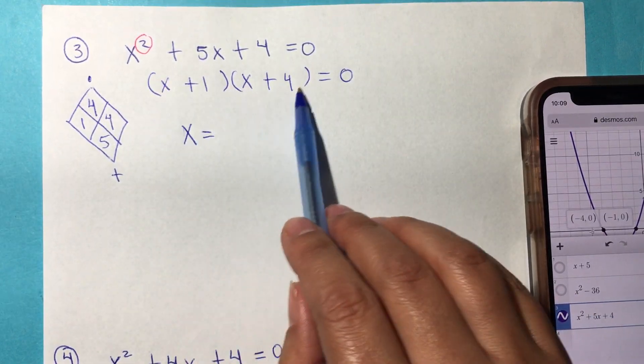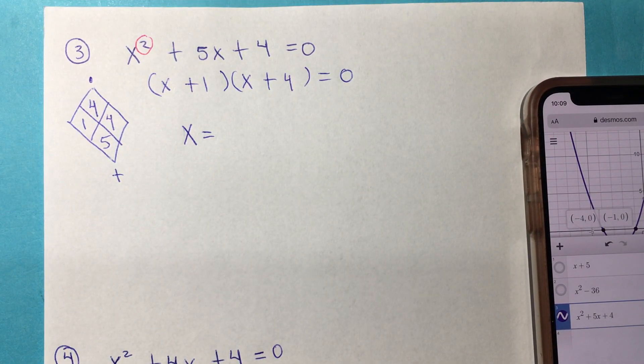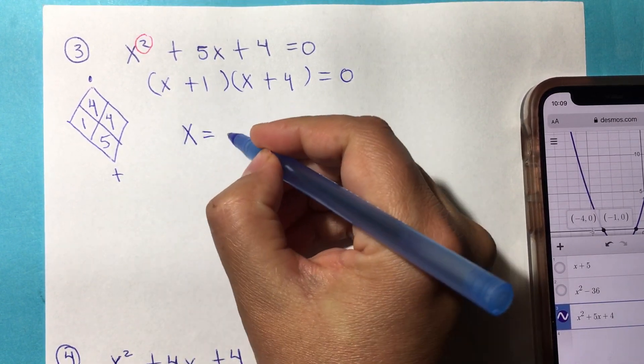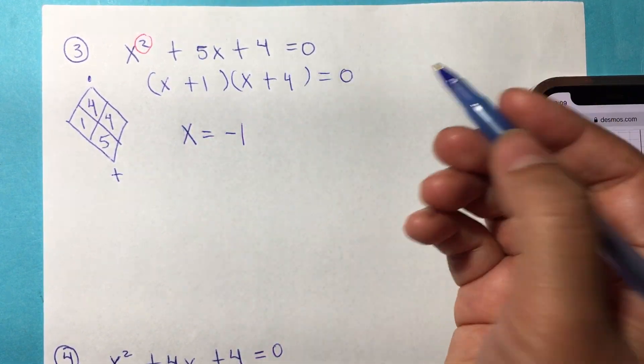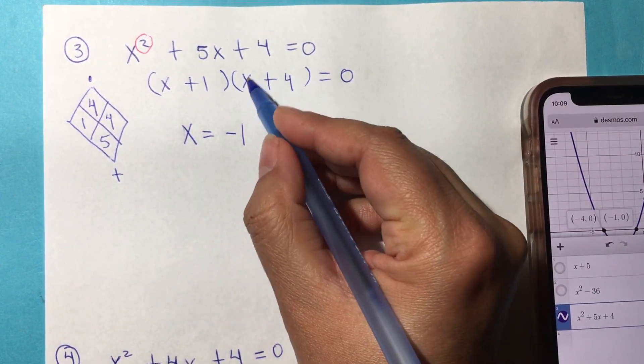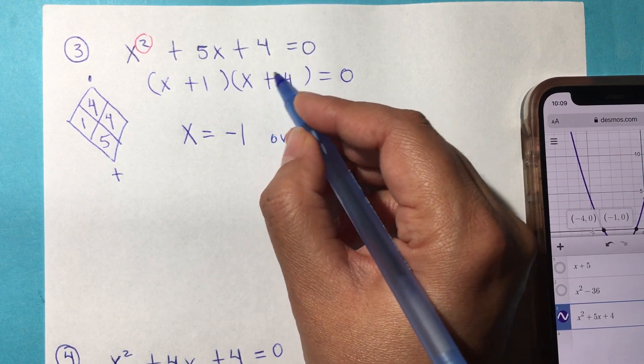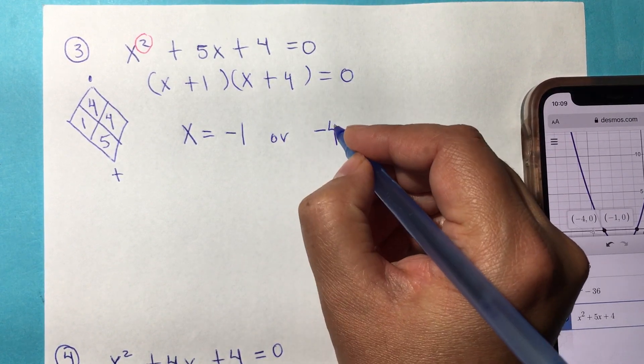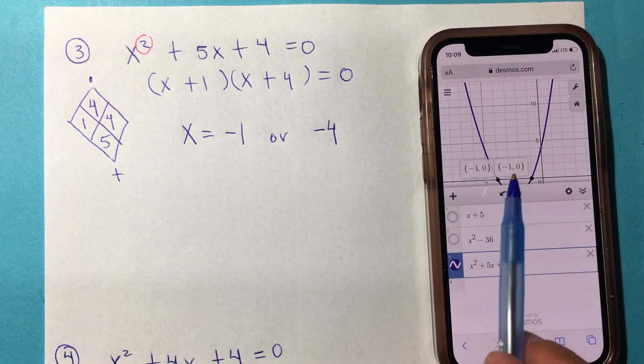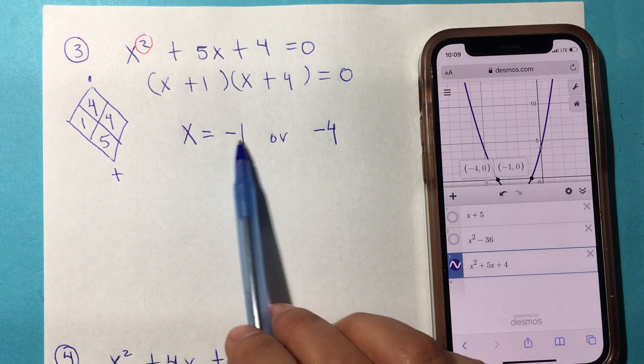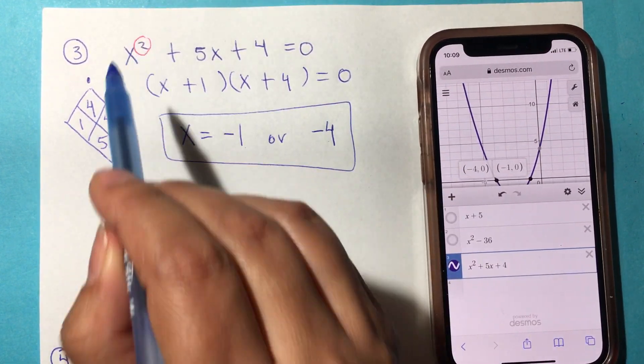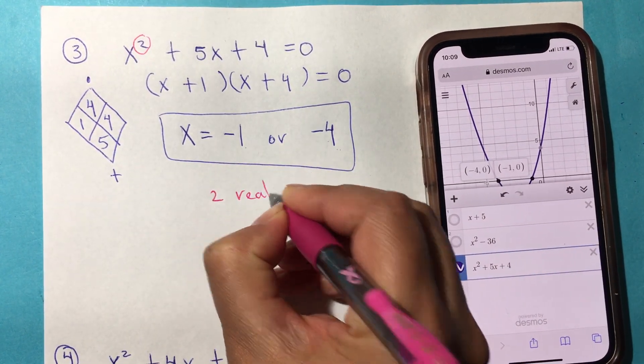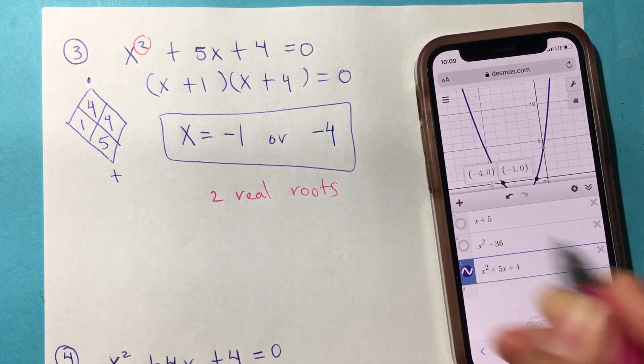We have to make one of these two into 0. How do I make this factor 0? If I already have 1, this needs to be negative 1 because negative 1 + 1 equals 0. Or if we want to make the second factor 0, since we have 4, this is going to be negative 4 because negative 4 + 4 equals 0. If you notice, negative 1, negative 4, those are the two solutions. These are two real solutions or roots.